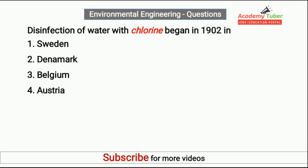Disinfection of water with chlorine began in 1902 in? Answer is Belgium.